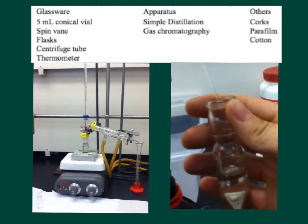Also, let's look at the equipment and apparatus we're going to be using in the experiment. We're going to be using the 5 mL conical vial with the spin vane, and we're going to be using a centrifuge tube as a receiver when we set up our simple distillation apparatus. Here we have our water-jacketed condenser, thermometer, our vial, and it's going to be placed over a hot plate.